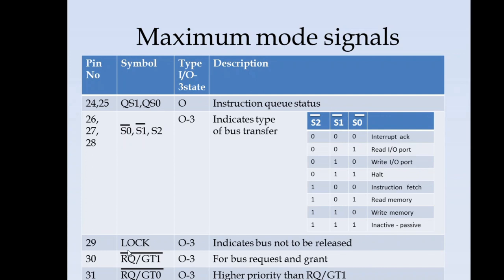The next pin, pin number 29 is LOCK. Next is pin number 30 which is request grant. In a multiprocessor environment if the bus needs to use certain resources from another processor, it will request for bus using request and grant is given through the grant signal. Similarly request grant zero, but this will have higher priority. When pin 29 LOCK is present it indicates that the bus should not be released to other processors.